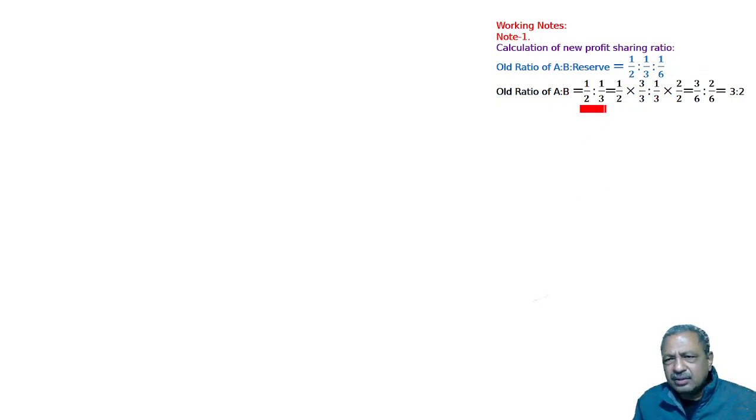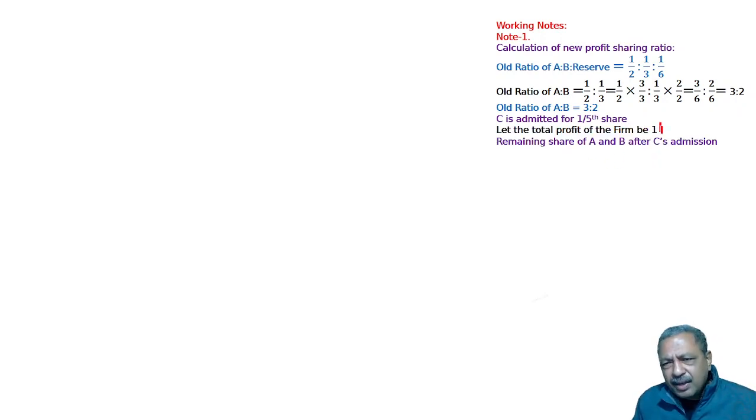Half is to 1 third. If we make the denominator 6, it becomes 3 is to 2. Then in the question it's written that C brings in adjustment B. C brings in rupees 5000 for 1 fifth share of goodwill. So we need to calculate old, new, and sacrifice ratio.